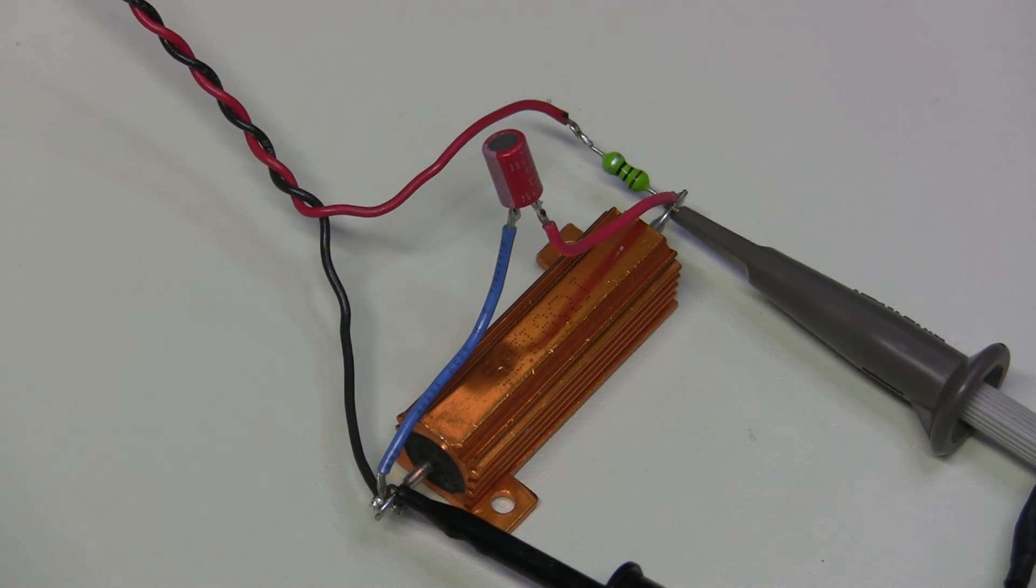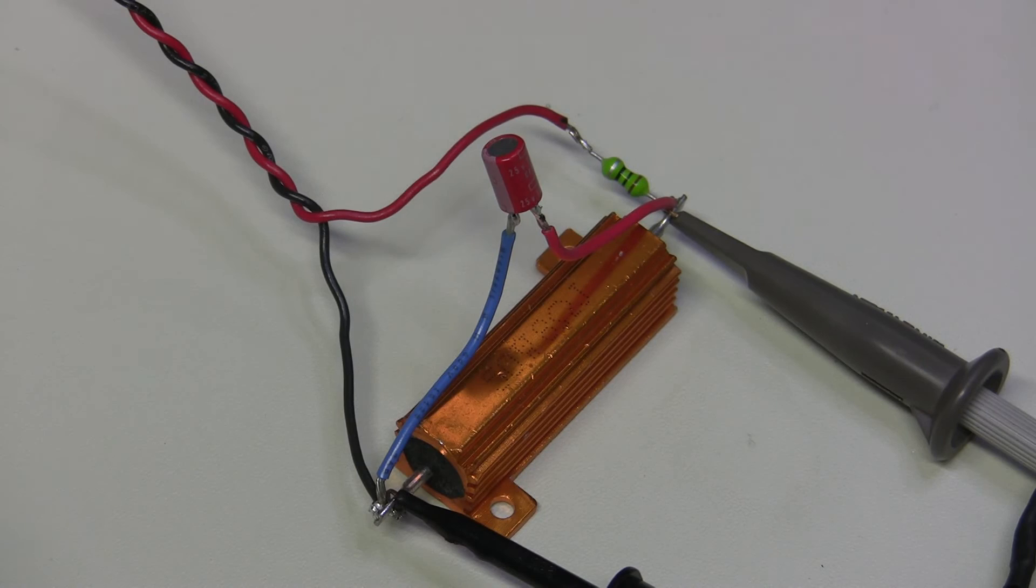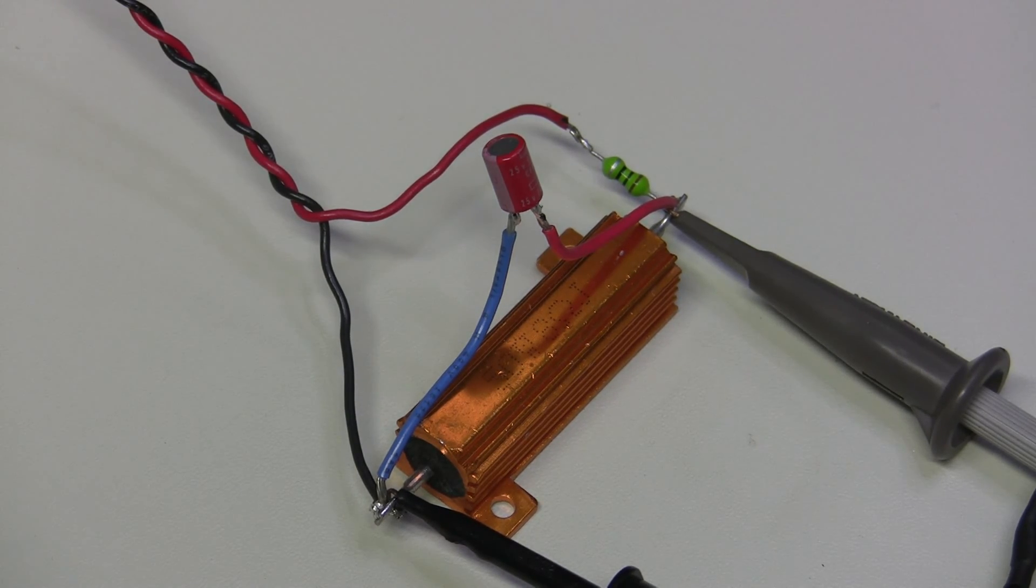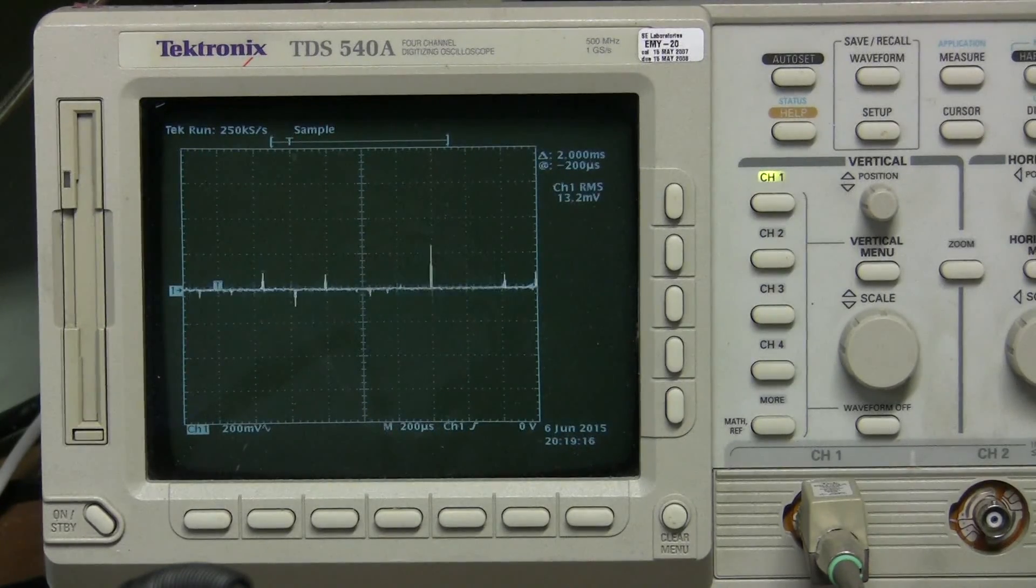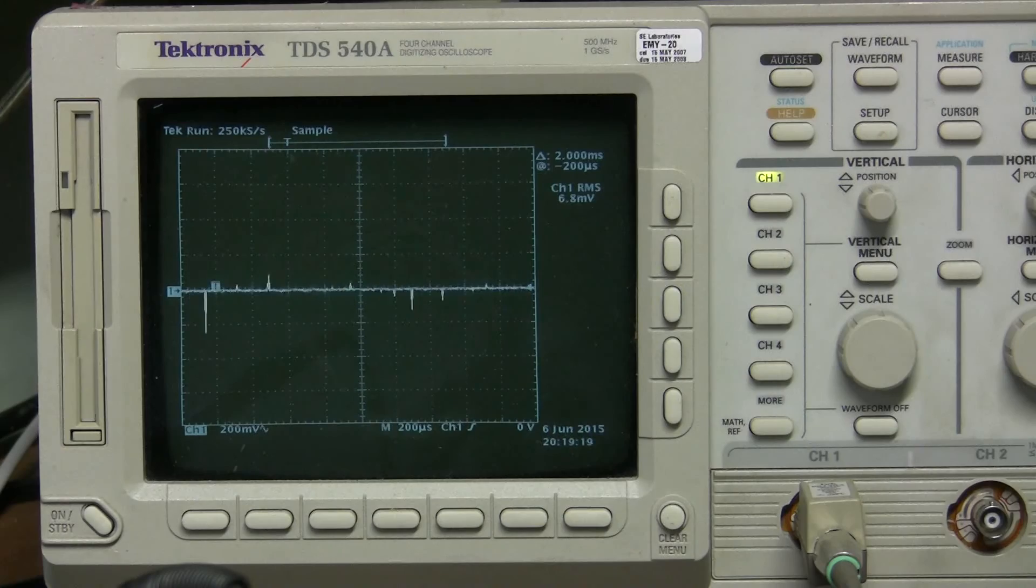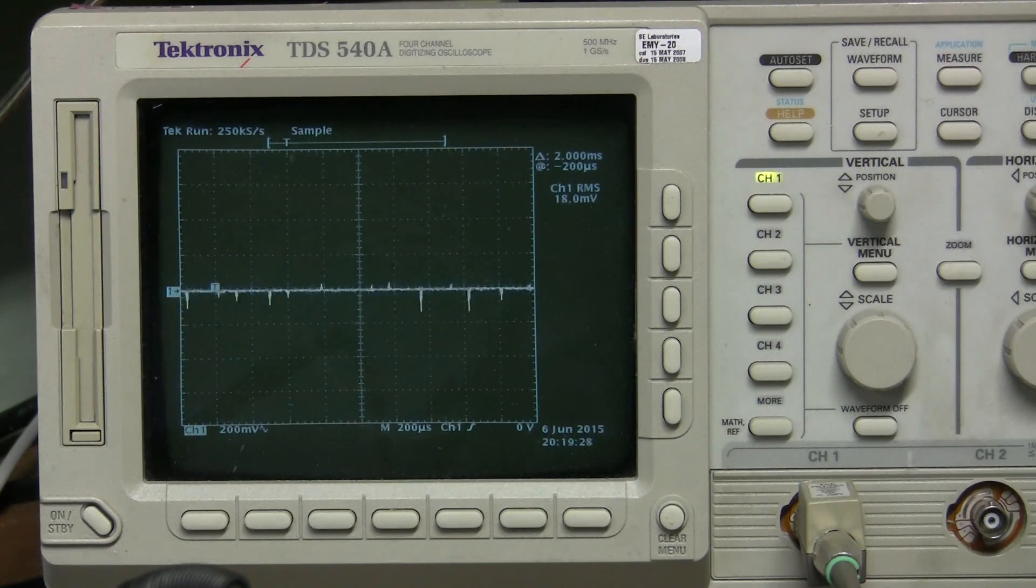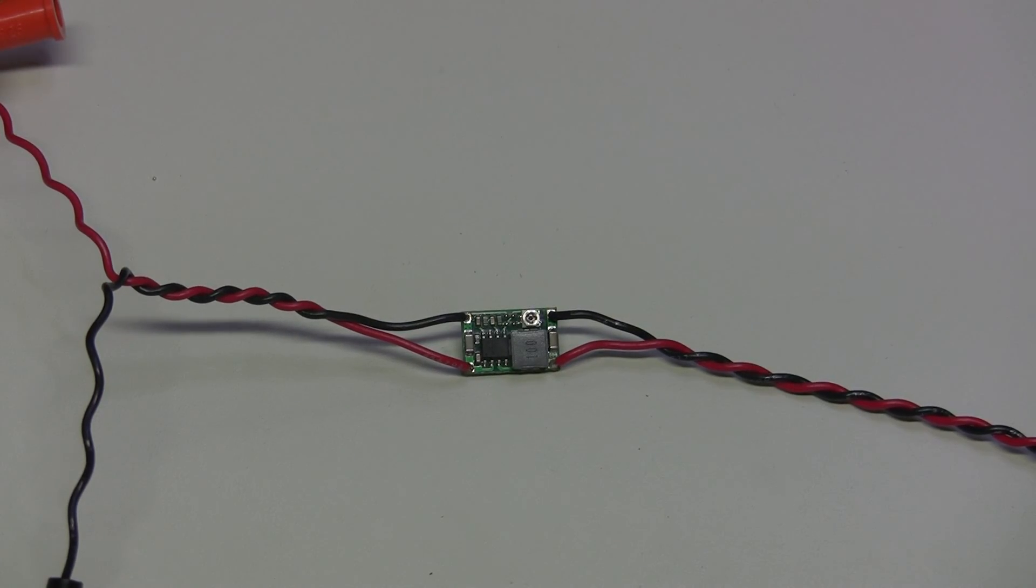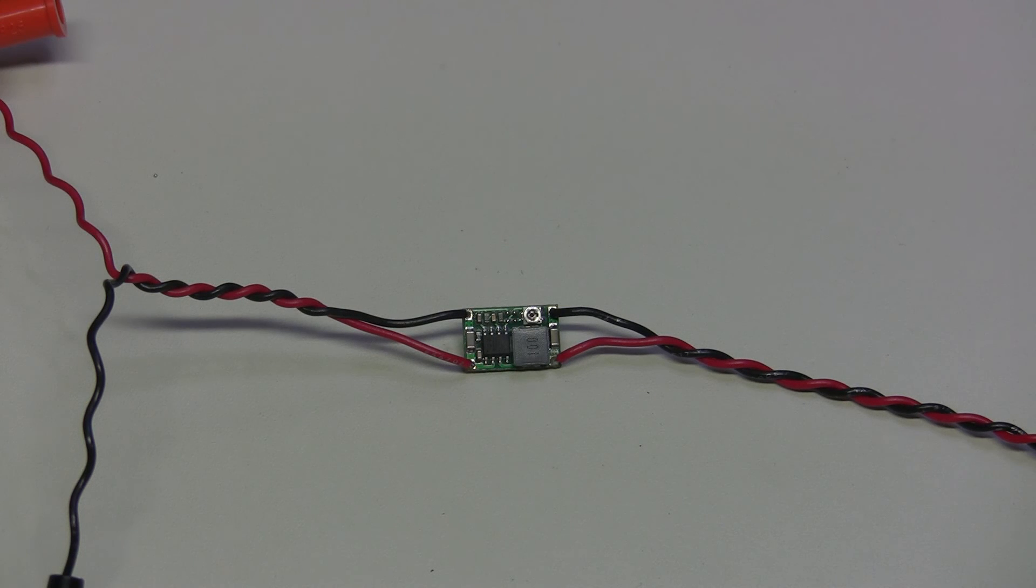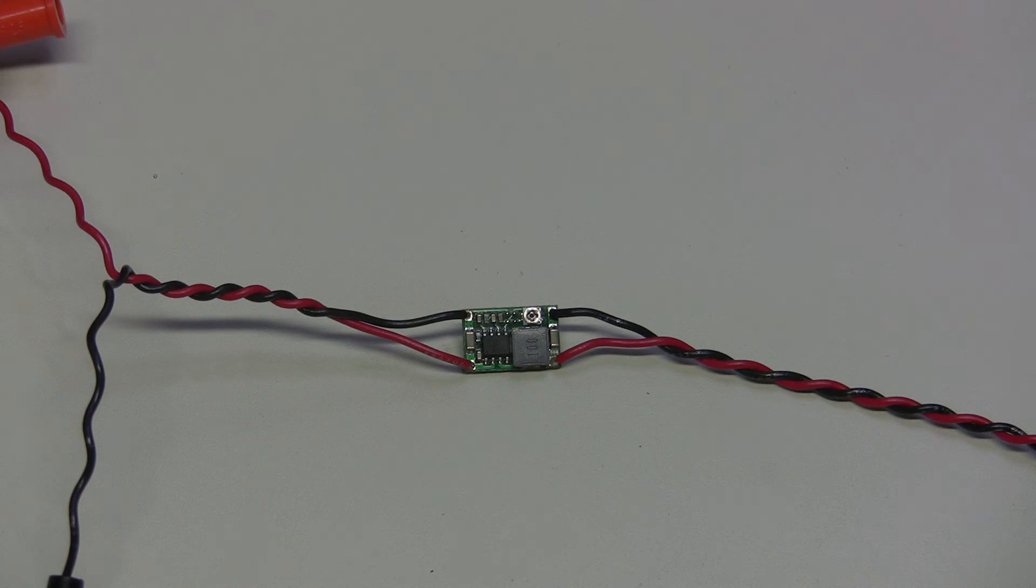And here I added 10 microhenry inductor before the load and the capacitor. Let's have a look now. It looks better still, but now we are starting to defeat the purpose I believe. If we need to add a lot of big capacitors and inductors, what's the point of having such a tiny module in the first place? So I think it's a nice little module but be careful about this noise. It's typical for switching regulators to have noise like this, and if low noise is very important for your application then you are much better off with linear regulators. Thanks for watching, bye!